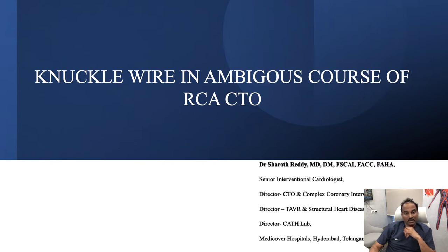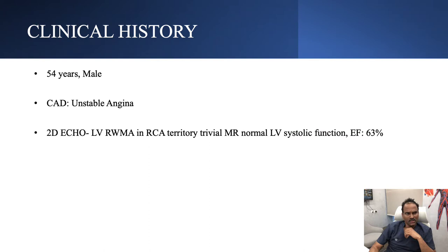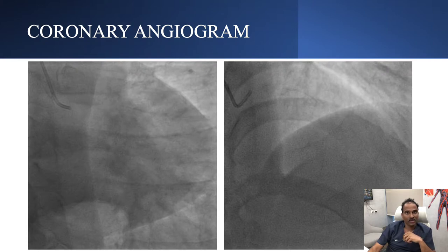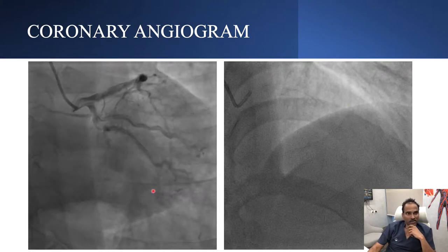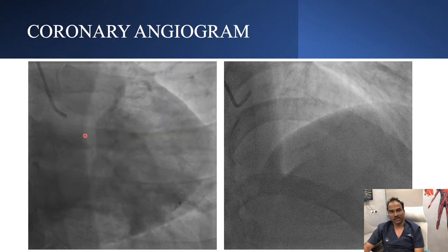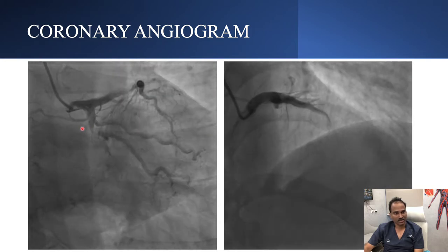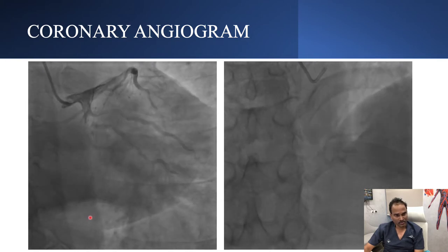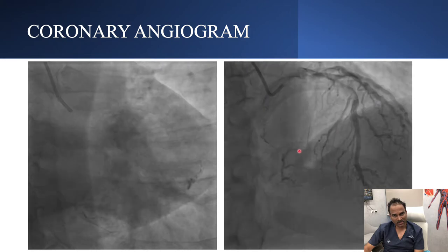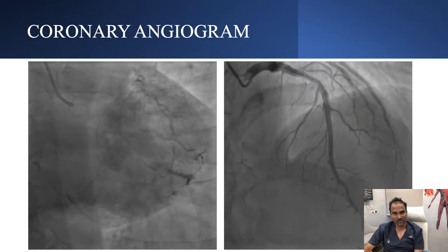Today I am bringing a case of knuckle wire in ambiguous course of right coronary artery CTO. My patient is a 54-year-old male, came with unstable angina and echo revealed RWMA in right coronary artery territory. Angiogram done revealed a tight lesion in OM1 and there is an intermediate lesion in left anterior descending artery. Mostly this is a culprit lesion for his non-QWMI. There is also epicardial coronaries which is filling right coronary artery.